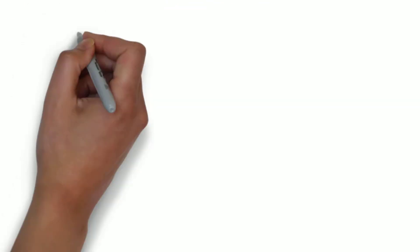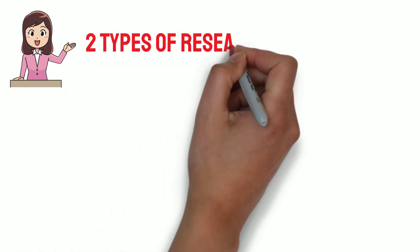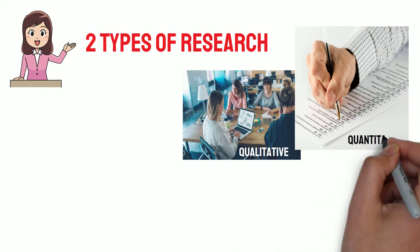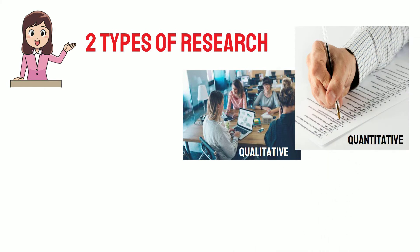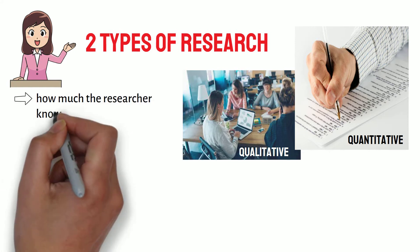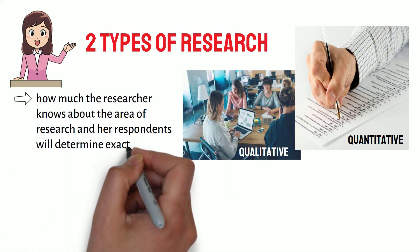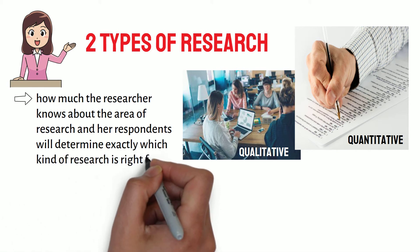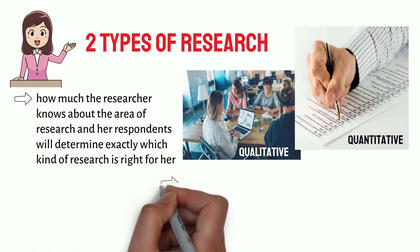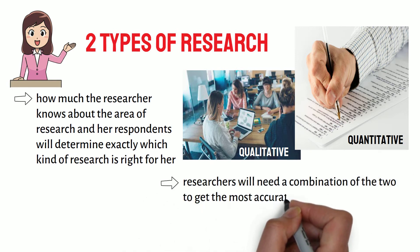Regardless of the subject of study, there are always two types of research to choose from, namely qualitative and quantitative. Please note that how much the researcher knows about the area of research and her respondents will determine exactly which kind of research is right for her. In some cases, researchers will need a combination of the two to get the most accurate data.